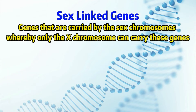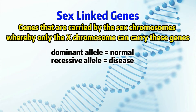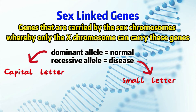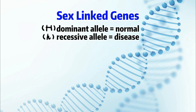All genes consist of a dominant allele represented by a capital letter, or a recessive allele represented by the small letter. In our syllabus, the dominant allele for sex-linked genes always represents the normal trait, while the recessive allele always represents the disease trait. For example, capital H represents the dominant allele for normal, and small letter h represents the recessive allele for a sex-linked disease.